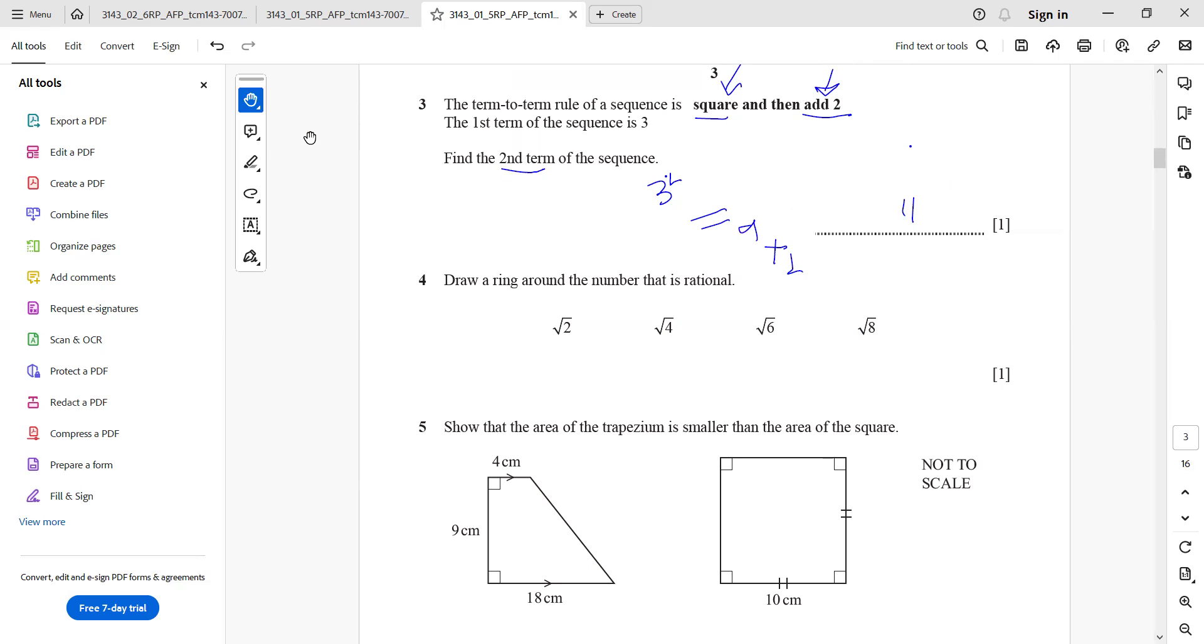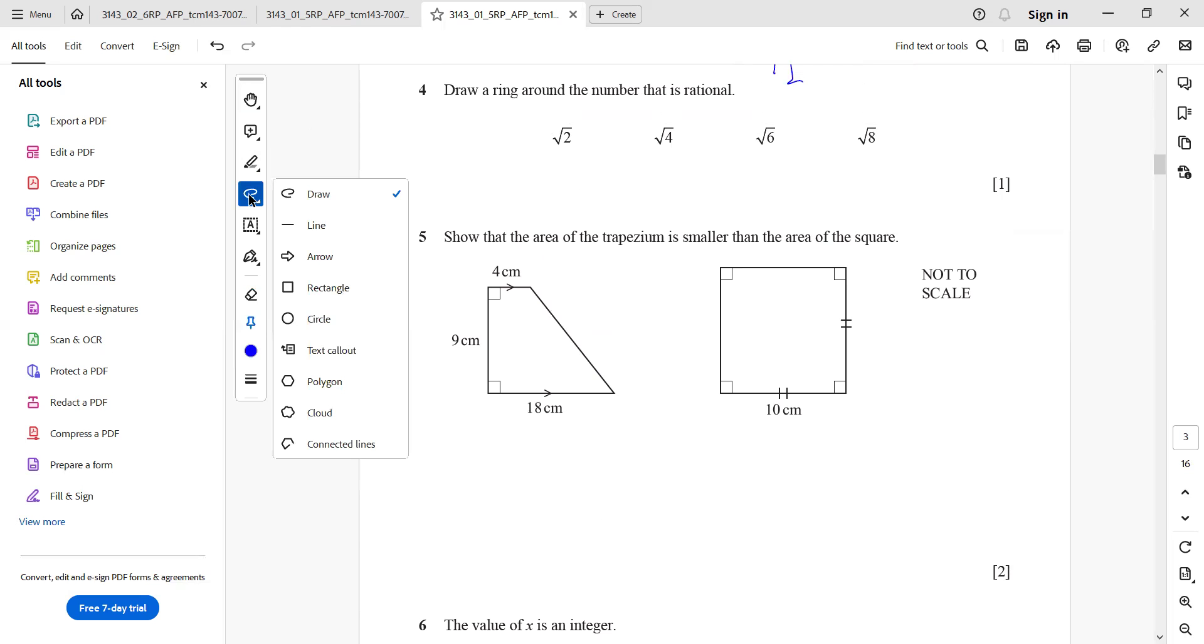We proceed to question number 4. Draw a ring around the number that is rational. From all of these numbers, we need to first of all compare that all of the numbers are going to have square root sign with them. Out of all these numbers, the number which has got a square root sign and the number itself is a perfect square will yield a rational number. That is 4 only, because 2 is not a perfect square, neither 6 or 8. All of these 3 numbers, 2, 6, and 8, none of them is a perfect square. So that's why when we would be taking its square root, we are not going to have a rational number. We need to give around this square root of 4 only.